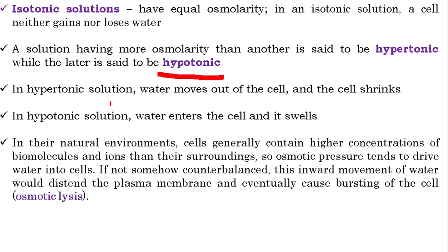This is a very important parameter. In our body, water moves from cell to cell based on osmotic concentration. If a cell is placed in a hypertonic solution, water moves from higher concentration to lower concentration — the solution is hypertonic, so its water concentration is lesser. Water moves out of the cell and the cell shrinks. In a hypotonic solution, water enters the cell and it swells, because the concentration of water is higher outside and lower inside, so water moves into the cell.